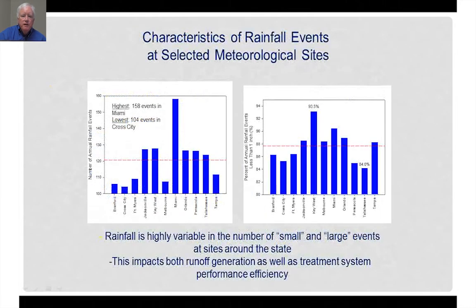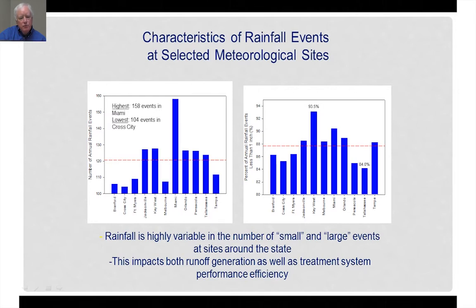Looking further at the characteristics of these events, we examined the number of annual rain events at sites throughout Florida. The highest number of events per year occurs in Miami with 158 events per year, while the lowest occurs in Cross City with 104 events per year, illustrating the variability in number of rain events per year across major monitoring locations.